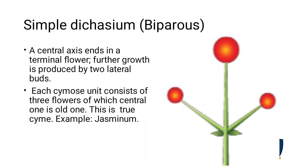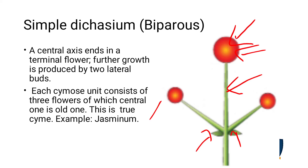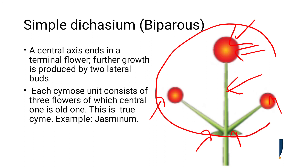Simple dichasium, biparous. Biparous means the central axis has a floret. This is the central axis and it has a floret here. From the lateral branch, you can see two lateral buds, and from those buds florets arise. Such type forms a whole cymose inflorescence unit. Example is Jasmine, Jasminium.